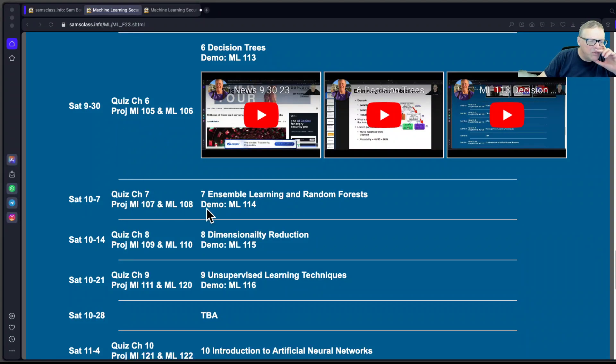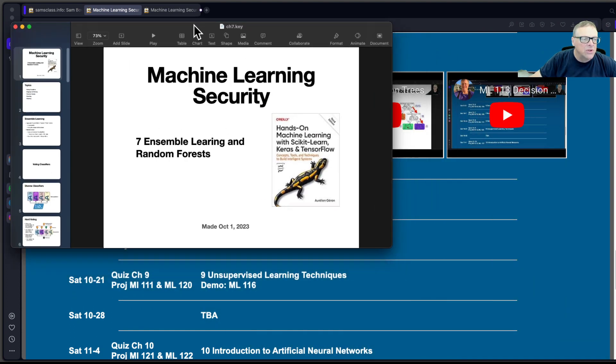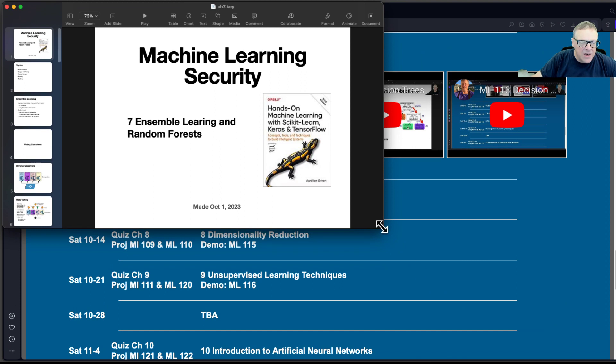All right, so here we are at machine learning. We're down here, going to talk about ensemble learning and random forests. I've got projects that go with the lecture for each of these lectures and the next two after it. I found the hands-on stuff very good in this book.